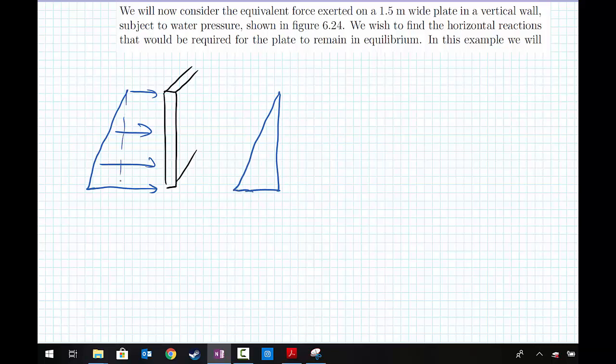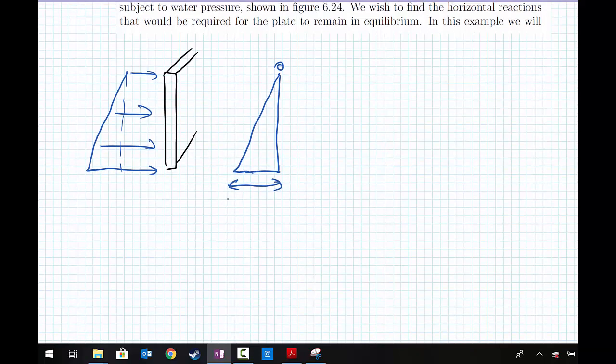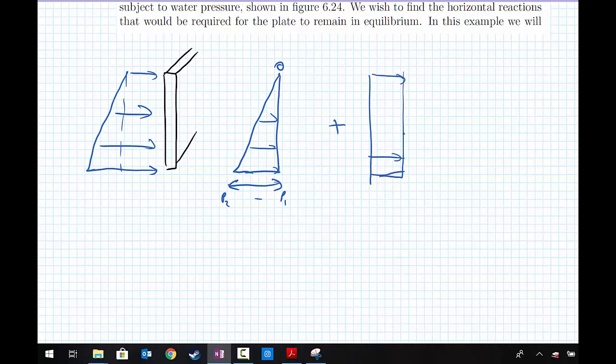That starts at 0 and we have this dimension which is P2 minus P1. Then we're going to add that to the rectangular loading, which has a constant value of P1.